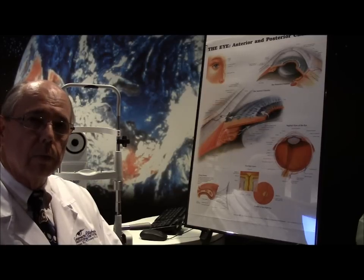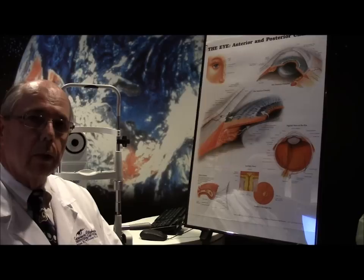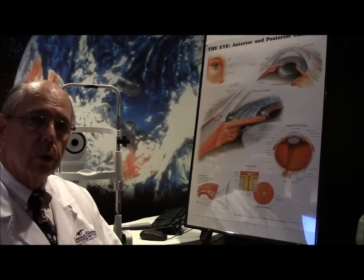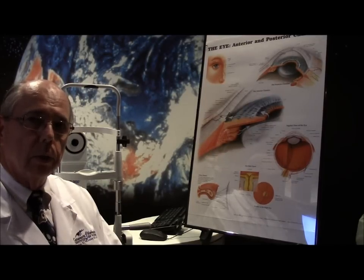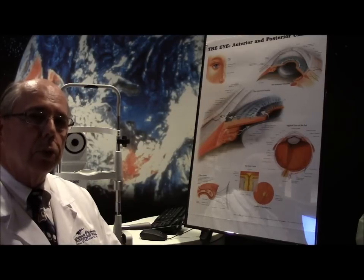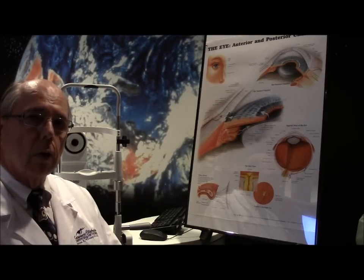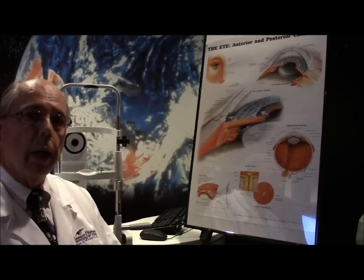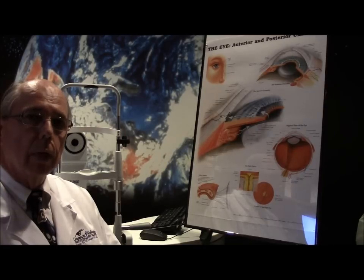Basically there's two types of glaucoma: open angle glaucoma and narrow angle or angle closure glaucoma. And what is the difference? Probably 95% or so of all glaucoma is of the open angle variety. And then what does that mean?